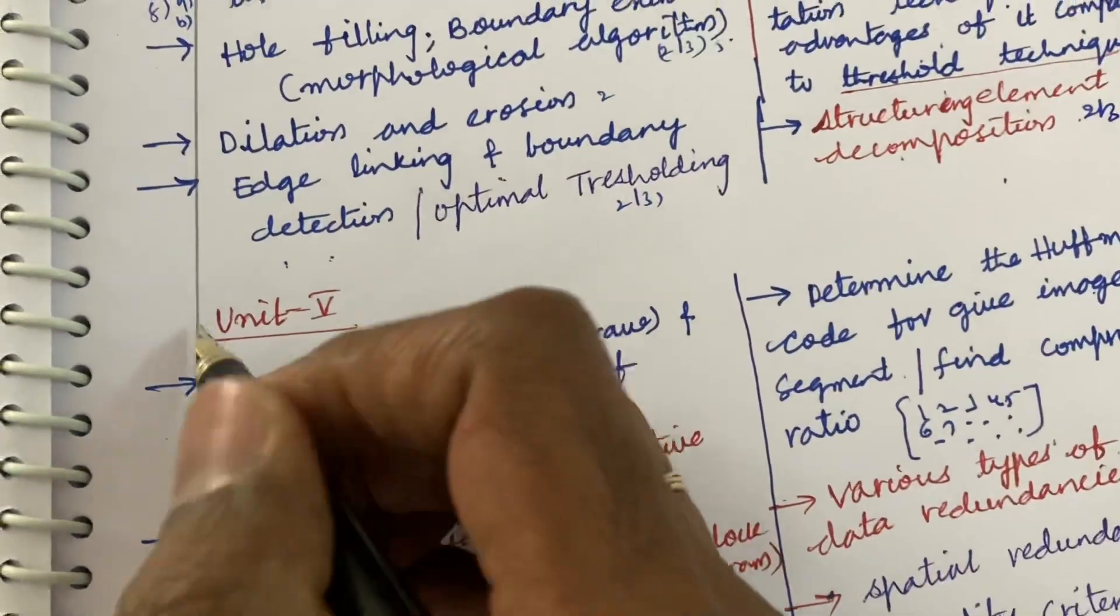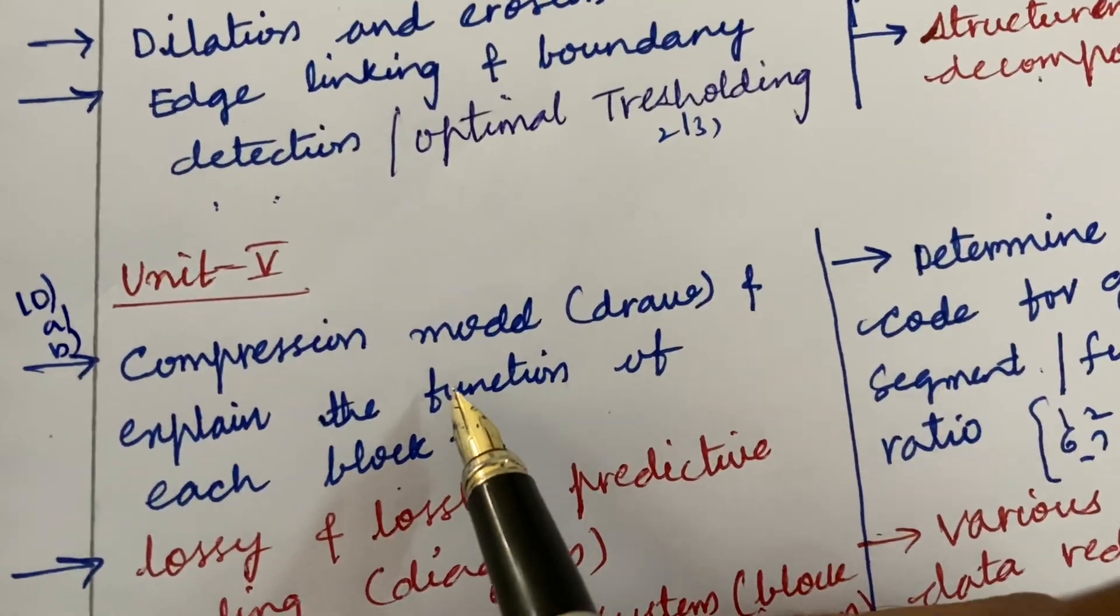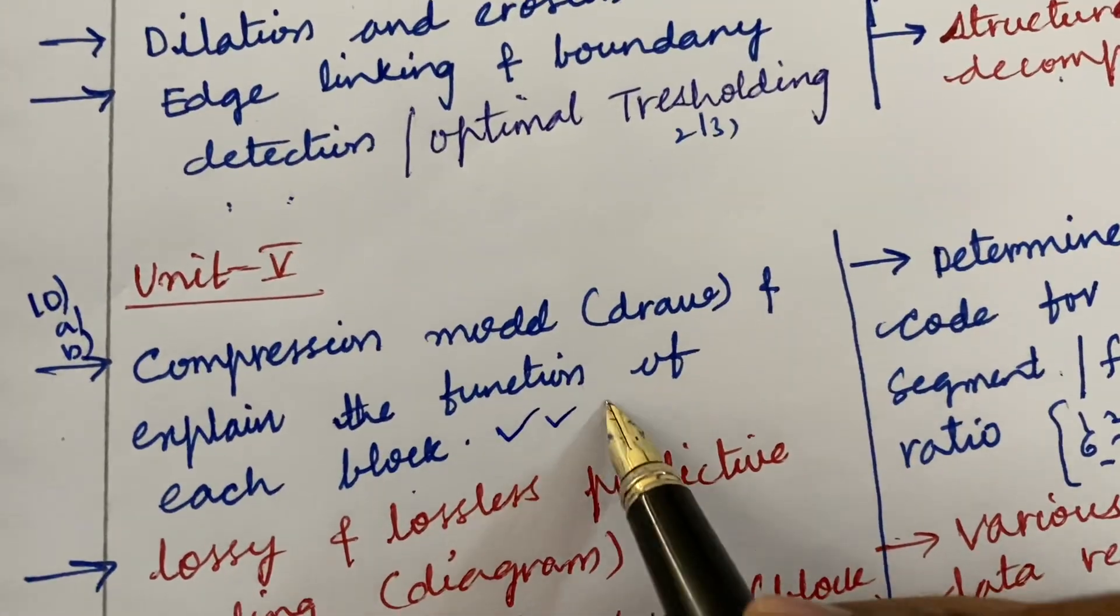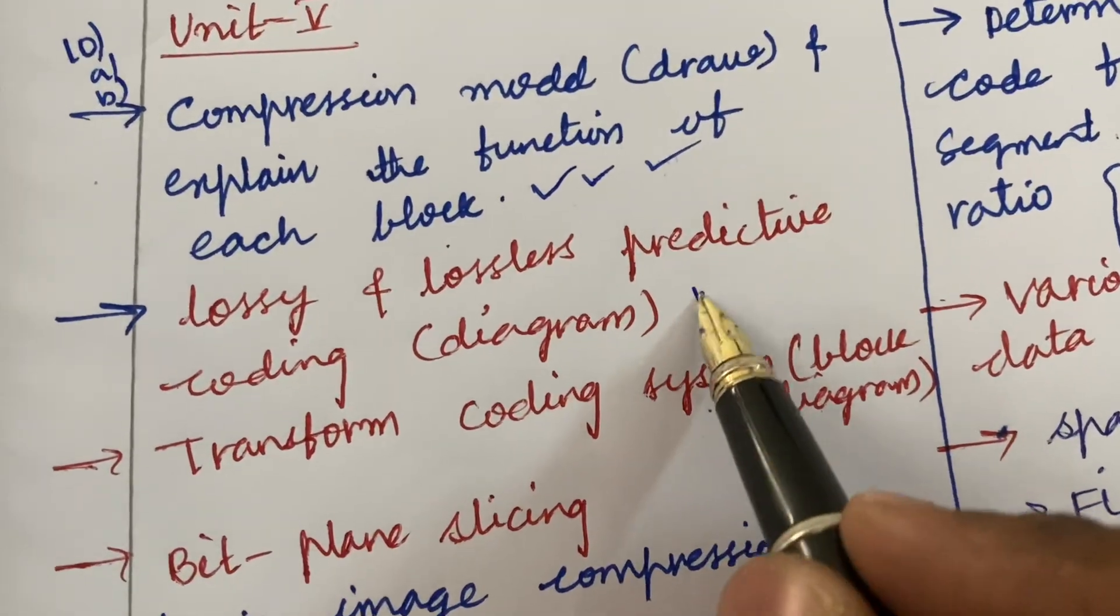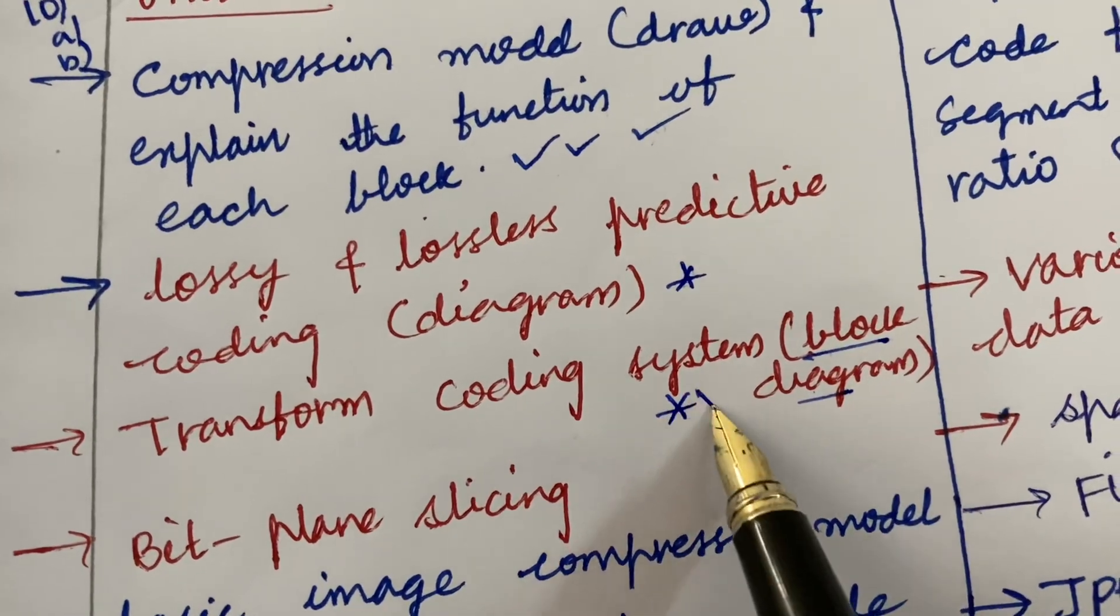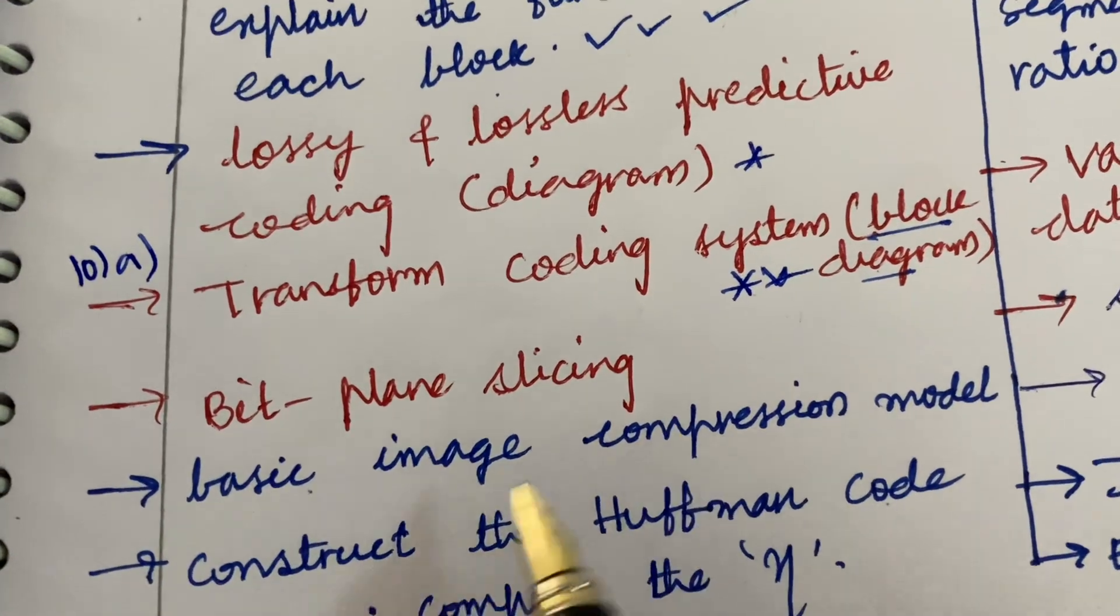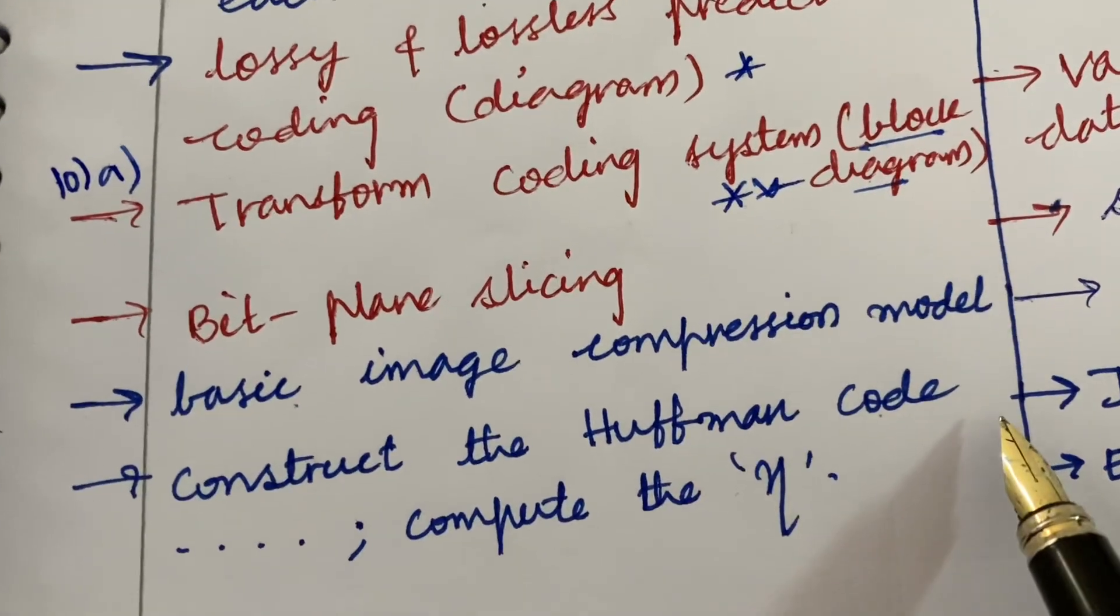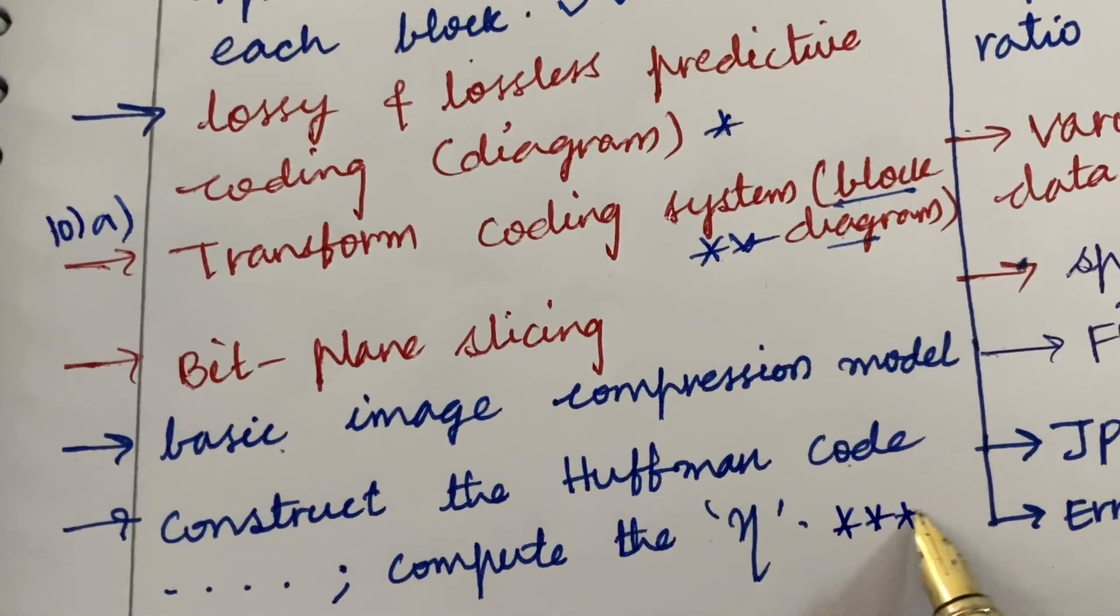Now let's jump into unit 5 which is of 10AB as well as 11AB. Compression model, draw it and explain the function of each block, is said to be 10A question. Lossy and lossless predictive coding diagram as well as transform coding system block diagram may be one of the topmost questions which may be 10A. Dear students, bit plane slicing and the basic image compression model and construct the Huffman code for a given value and compute the efficiency is said to be a 10B equation.